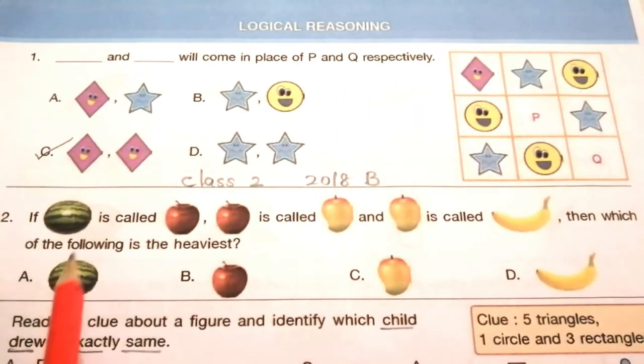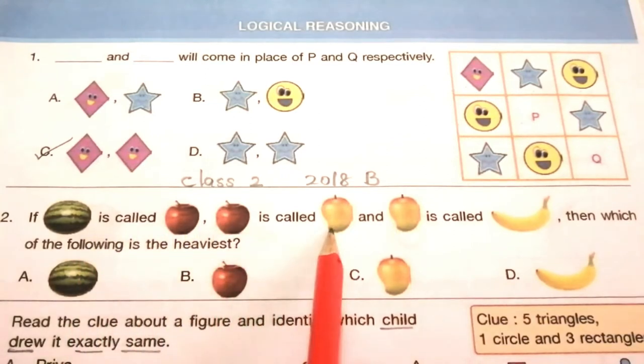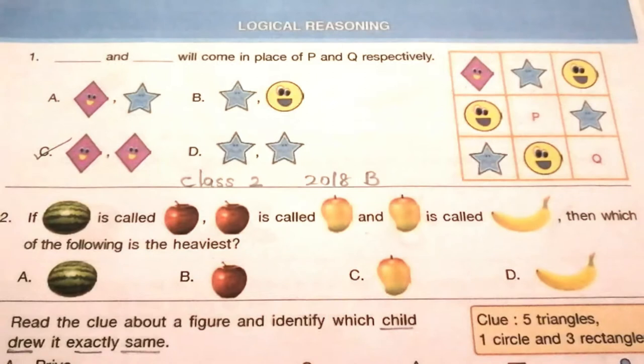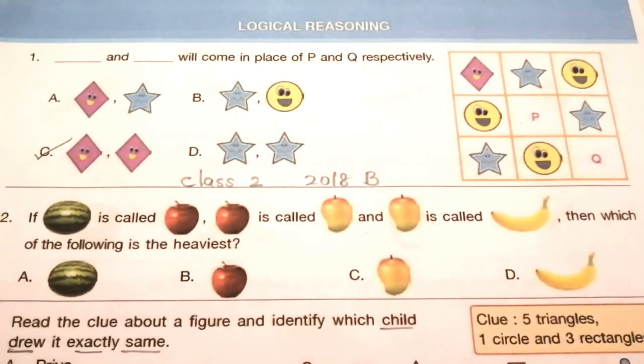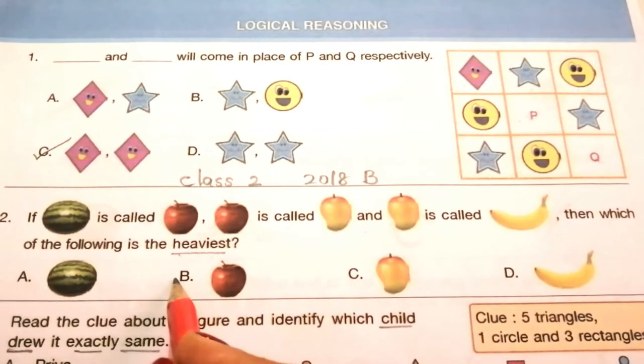Question 2: If watermelon is called apple, apple is called mango, and mango is called banana, then which of the following is the heaviest? Which is the heaviest? Watermelon. But watermelon is called apple, so the answer is B, apple.